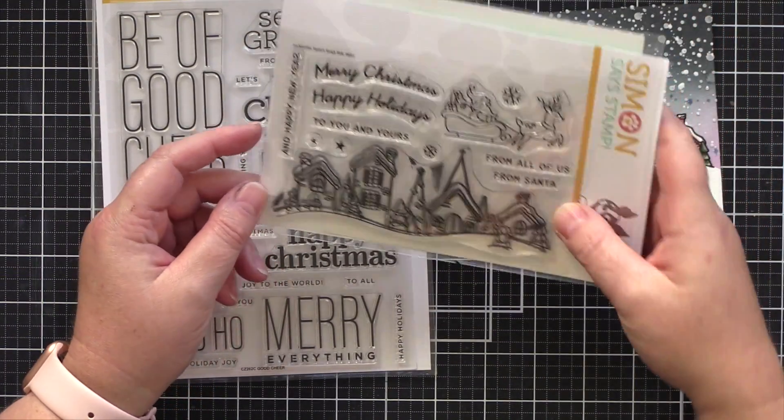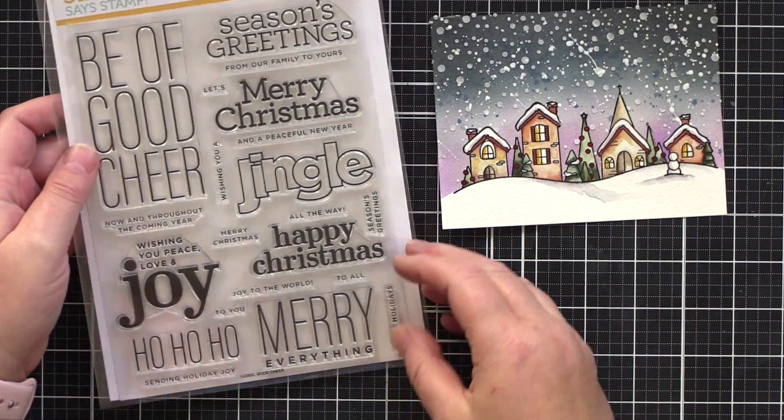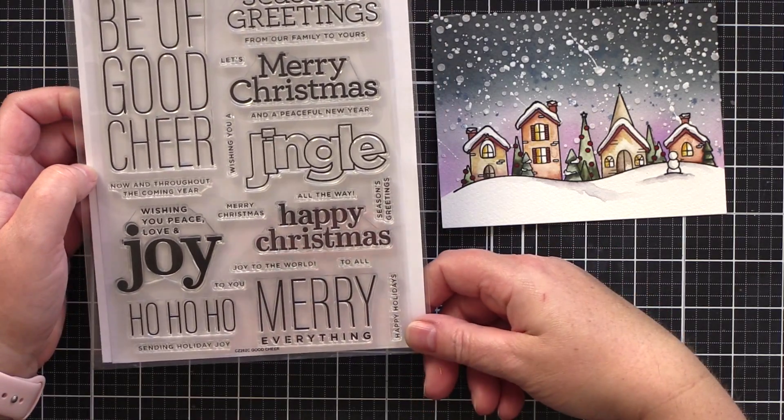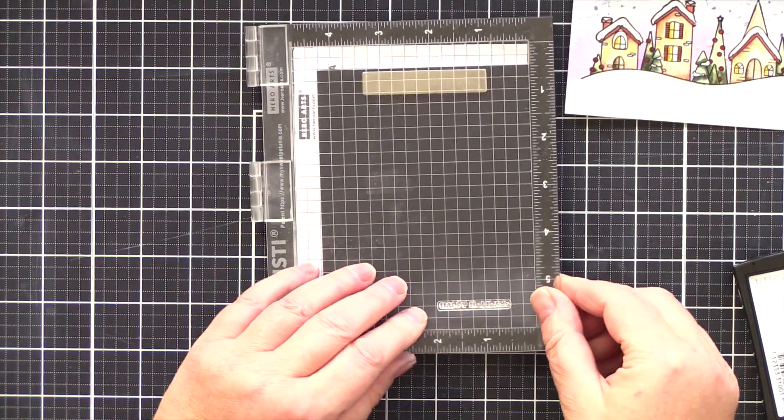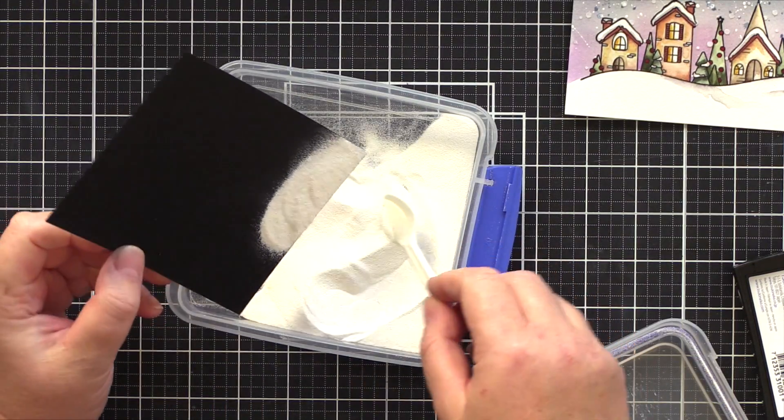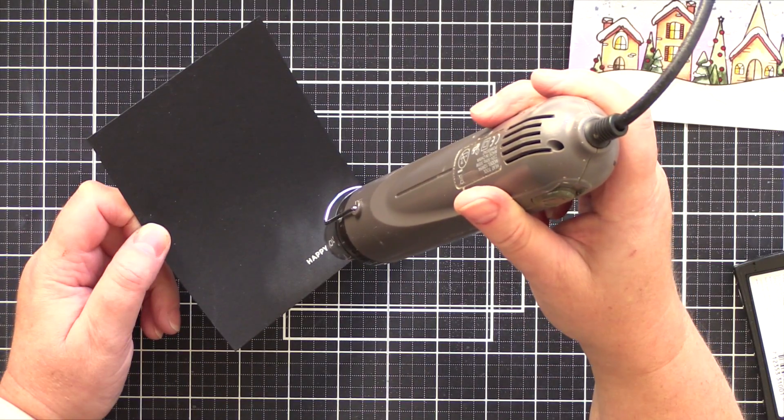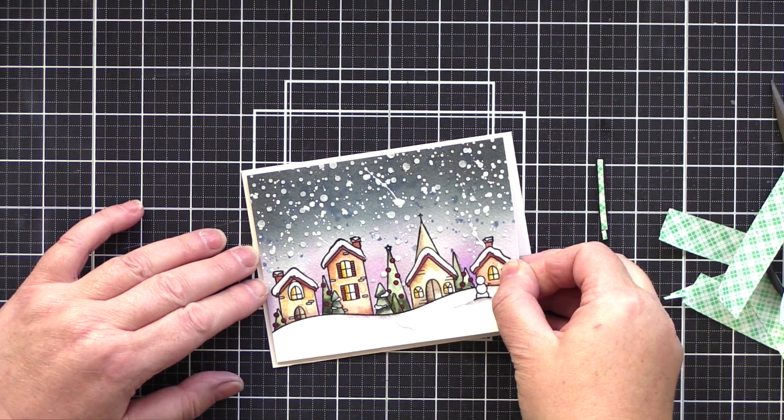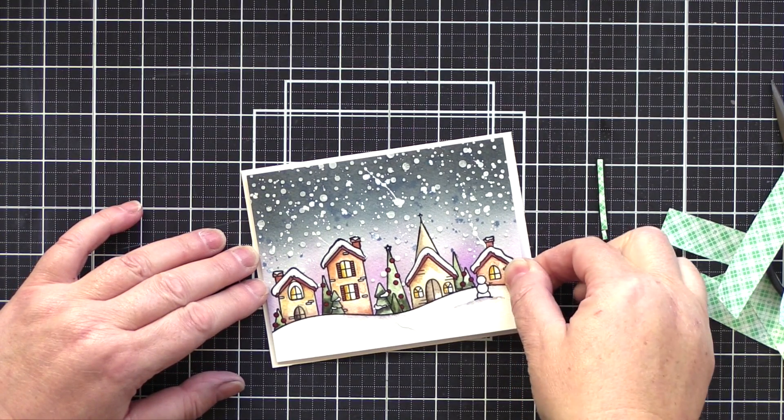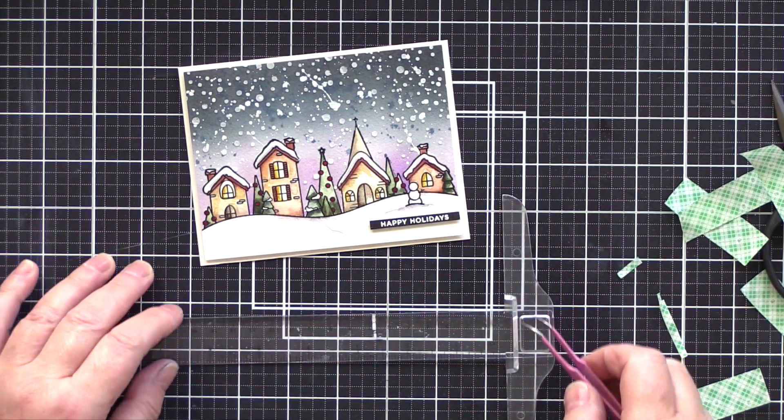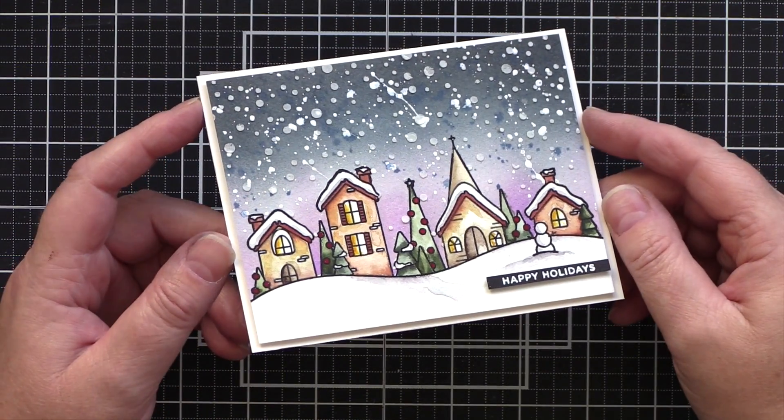There are some great sentiments in the Santa Sleigh Ride slider set but I love the clean lines of Cassie Zilsky sentiments and so I chose a greeting from the Good Cheer set. I stamped it in Versafine ink on black card and white heat embossed and then trimmed it down to a skinny sentiment. I trimmed the main panel and added foam adhesive to the back and then added to an ivory card base. I added more foam adhesive to the back of the sentiment strip and added that under the little snowman.